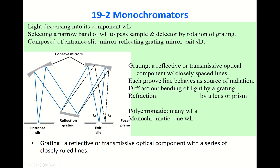This type is called a Czerny-Turner monochromator. There are several different types of monochromators, but the principle is the same — they have one or two mirrors and, without exception, they all have a grating.